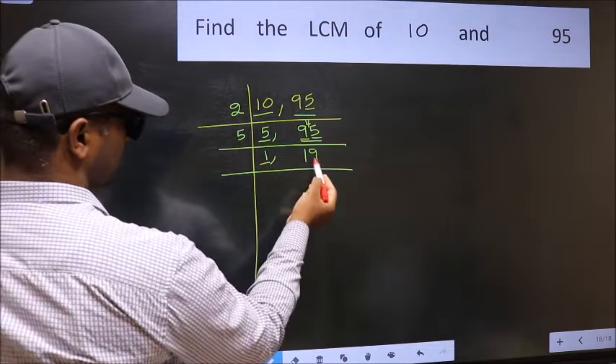Now we got 1 here. So focus on the next number 19. 19 is a prime number. So 19 once 19. So we got 1 in both the places.